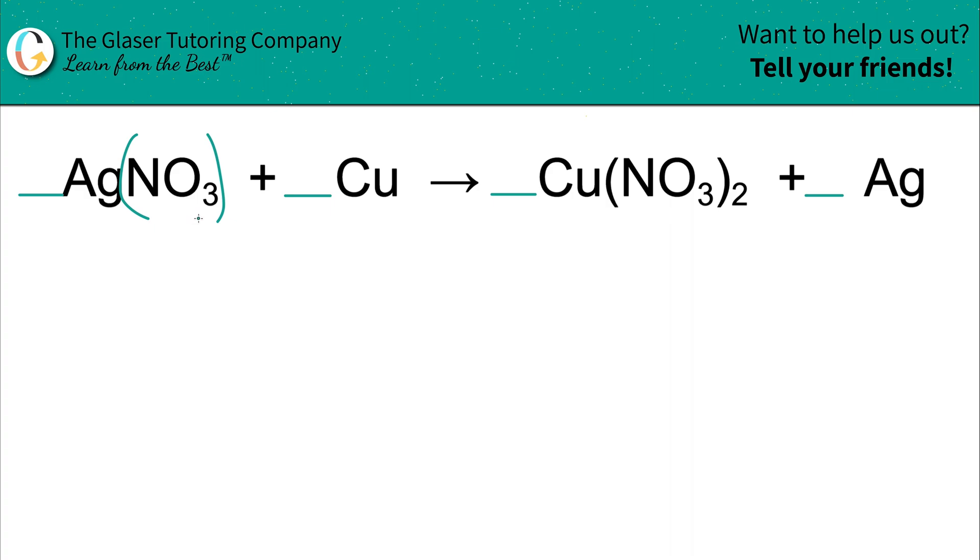I look to balance nitrate next. I notice I have only one nitrate on the left-hand side, and I also have nitrate on the right-hand side, but there's two of them. Therefore, I have to place a coefficient of 2 on the left so that I balance it out. Essentially now, if you think about this, I have two silver nitrates, and I have two nitrates in total, and that'll balance the two nitrates in copper nitrate.